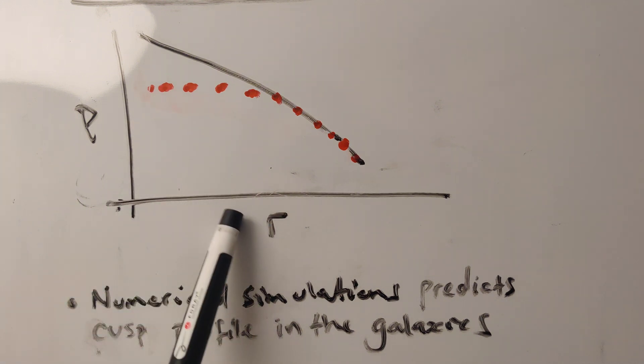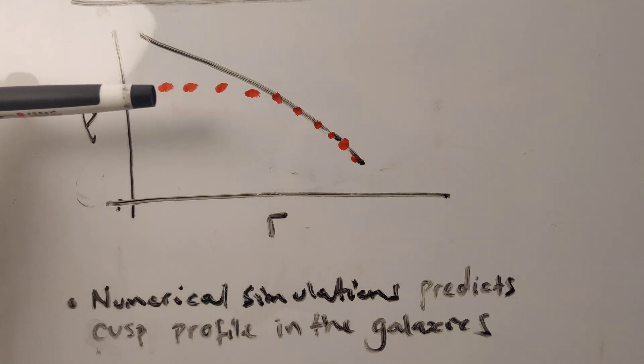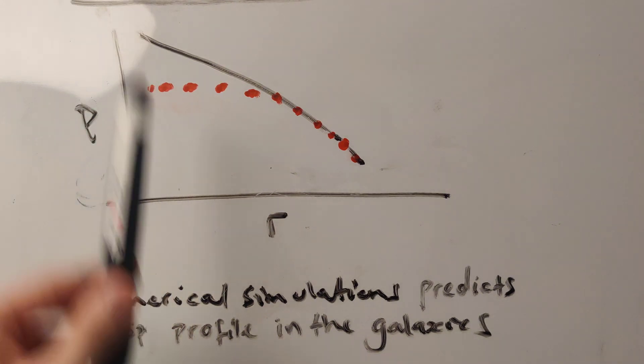And you can see, as you get closer to the centre of the galaxy, it flattens. It doesn't increase sharply.